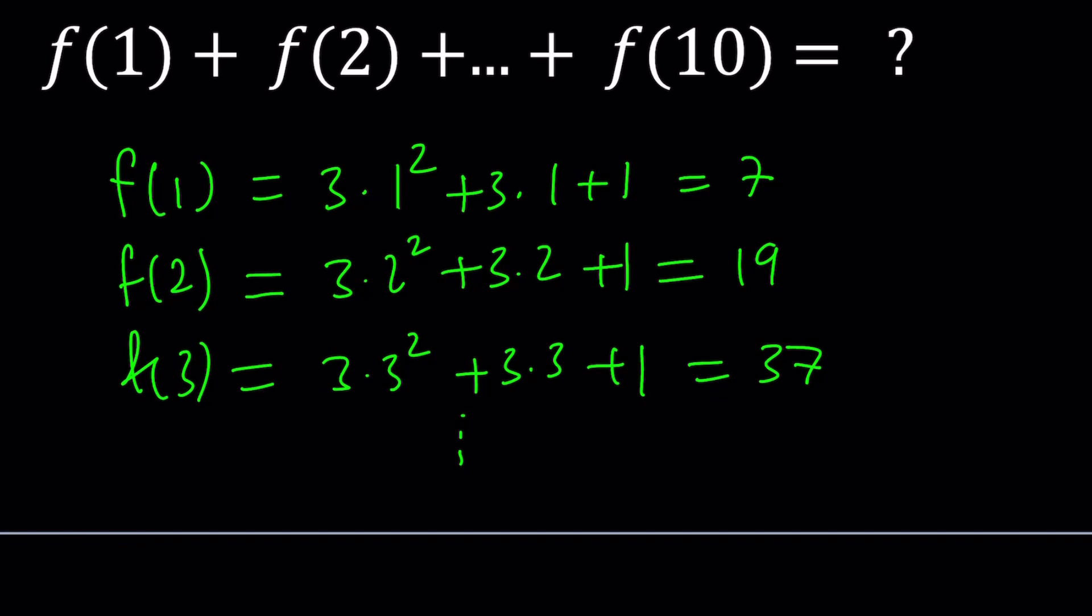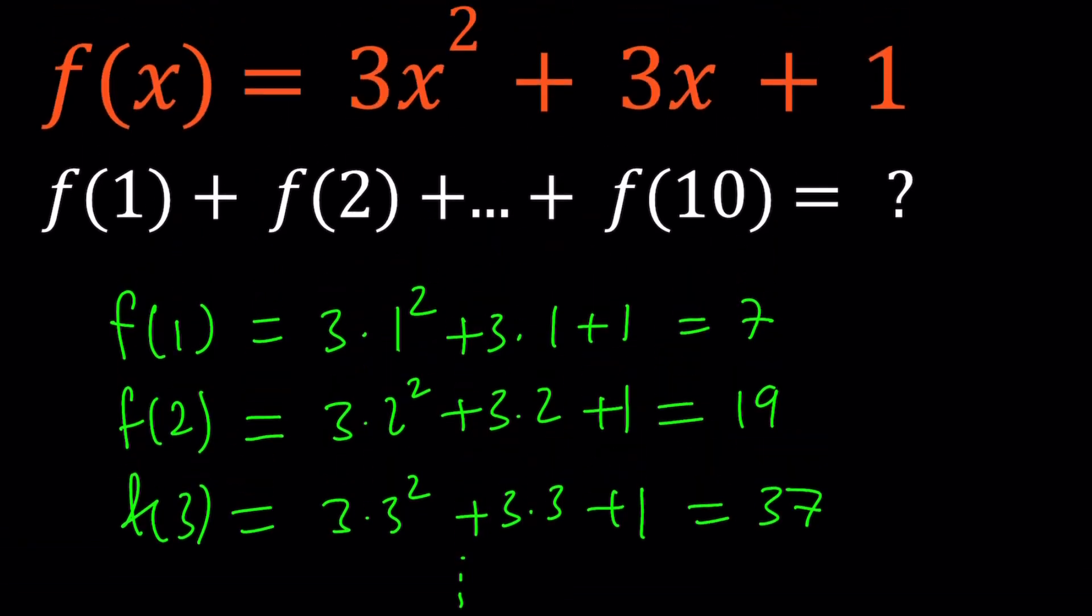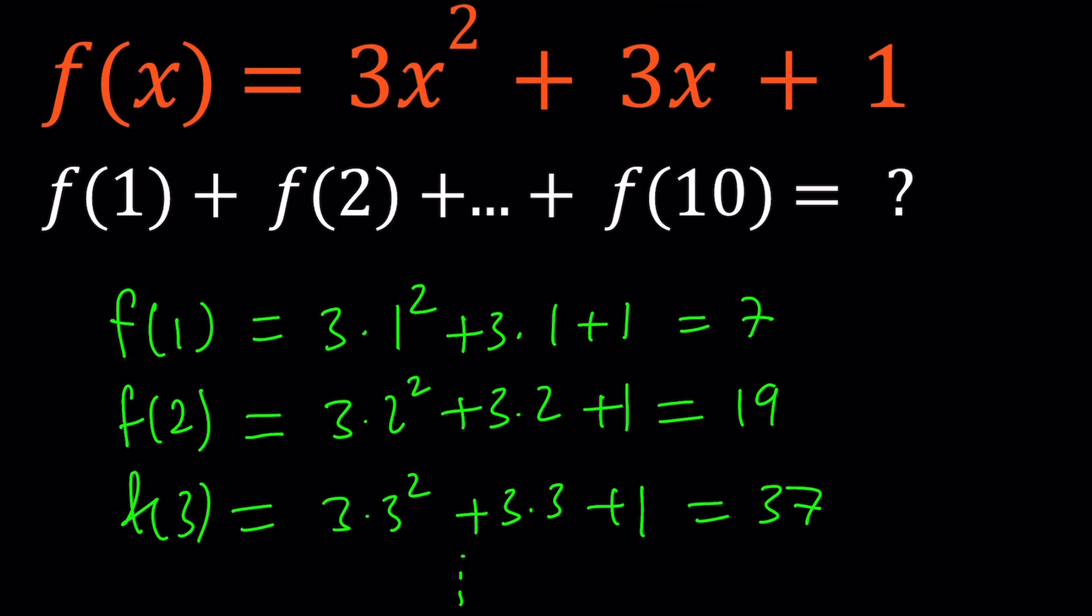Isn't there an easier way to do it? I mean, if there's a question like this on this channel, there's probably an easier way to do it. So we're going to be looking for a pattern. And by the way, this is not a good method. You can definitely go by this, but what if they ask you to find the sum f1 through f100? Then would you evaluate 100 numbers and add them up? You could, but that's not recommended.